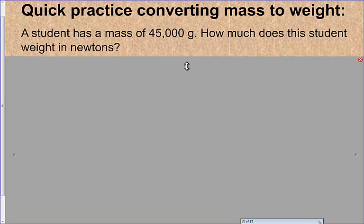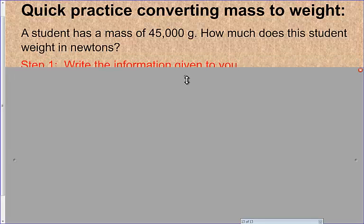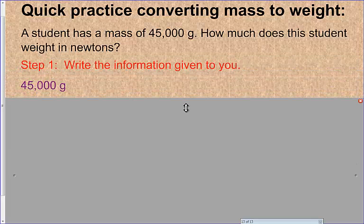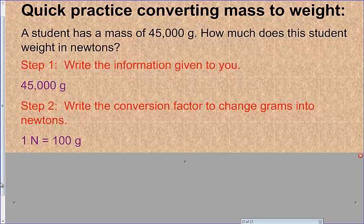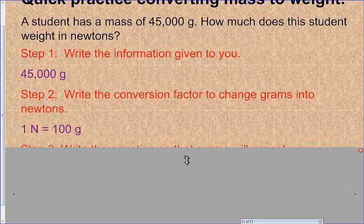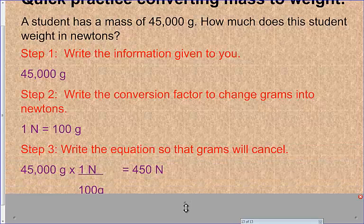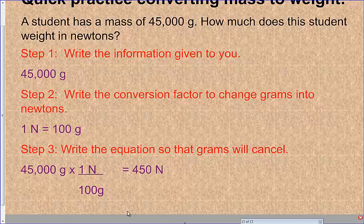Here's a quick practice to convert from mass to weight. If you have a student that has a mass of 45,000 grams, which would be equivalent to about 45 kilograms if you convert it. How much does the student weigh in Newtons? Well, it's really easy to figure out. First, you want to write out what you're given. So 45,000 grams is the number that you were given. Then you want to write out that conversion factor that I gave you. 1 Newton equals 100 grams. You go ahead and plug it in, canceling out the grams. Write the equation: 45,000 grams times 1 over 100 grams. And you do this so your grams can cancel out. 45,000 divided by 100 gives you 450 Newtons. So this student will weigh 450 Newtons.